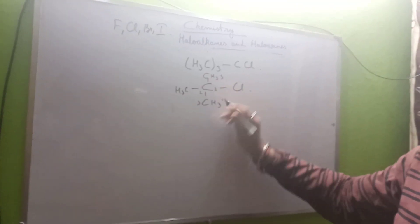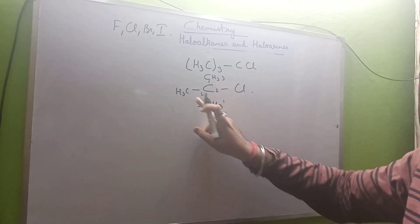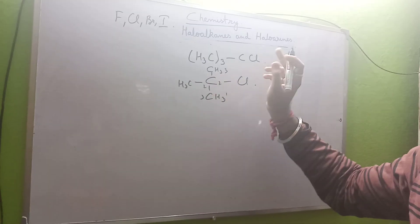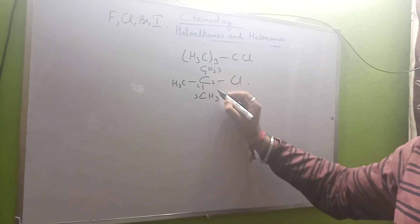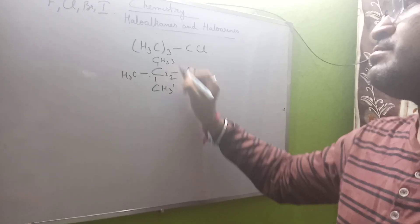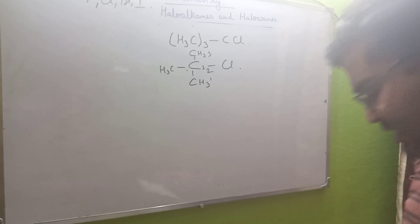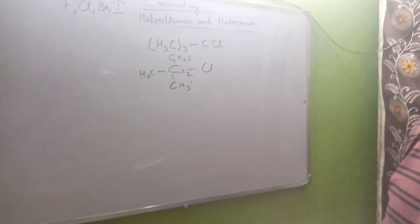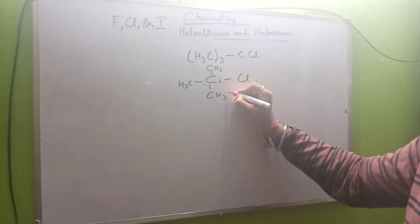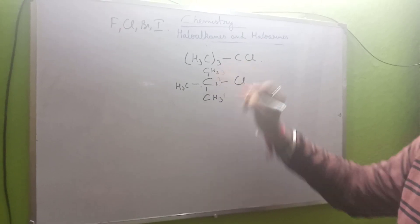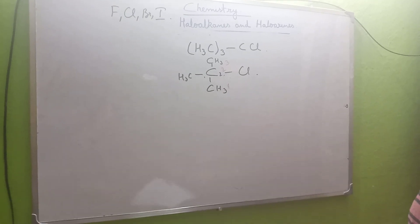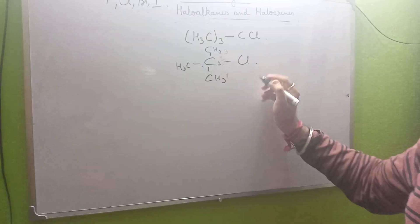The naming can be done from this side or from this side, or as from one, two, three. So we are doing one, two, and three — in this way the naming is being done. As we number it one, two, and three, we can see that the functional group should always get the first preference.